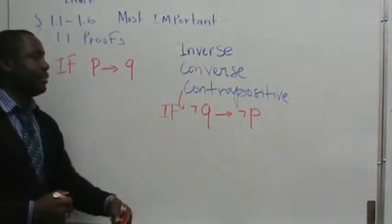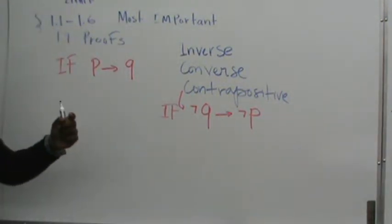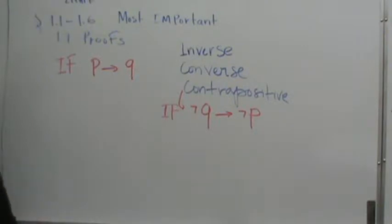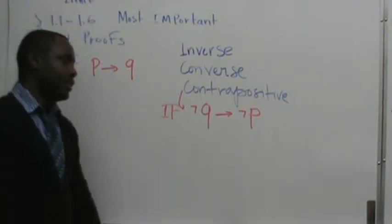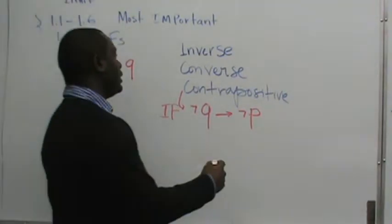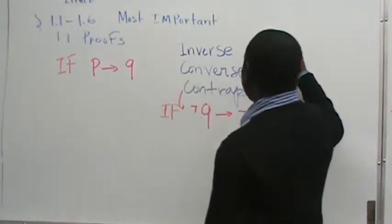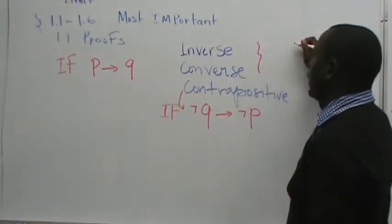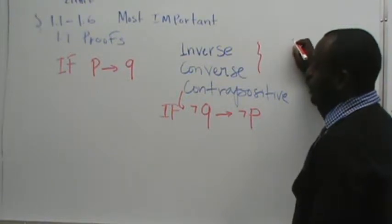If not Q, then the arrow means then, not P. And these two are logically equivalent. So I do leave it up to you. I'd like you guys to check this for me. If you haven't, if you don't come up with me, if you have to check this for me.